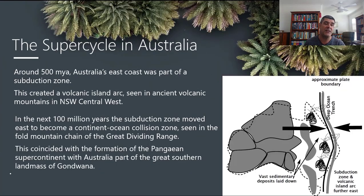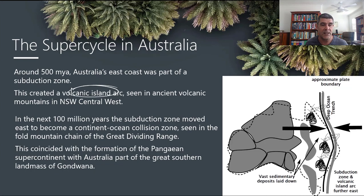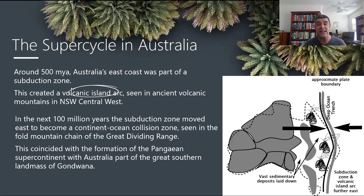Around 500 million years ago, Australia's east coast was part of a subduction zone. Subduction zones are often associated with island arcs, and while we can't see them now, we're looking for evidence — which is what we were doing in our last video when we talked about the plate tectonic supercycle and the Wilson cycle stages. We can see evidence in the New South Wales central west region of ancient volcanic mountains, suggesting they were part of an island arc resulting from a subduction zone — that classic convergent boundary between oceanic and continental crust, or sometimes oceanic and oceanic crust.